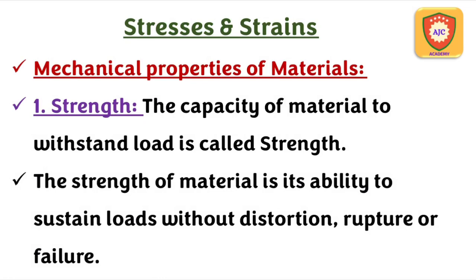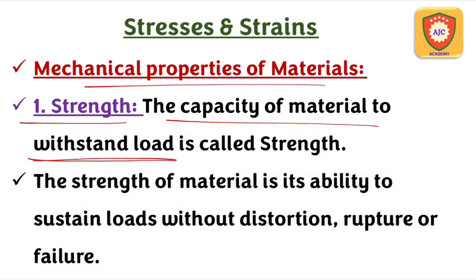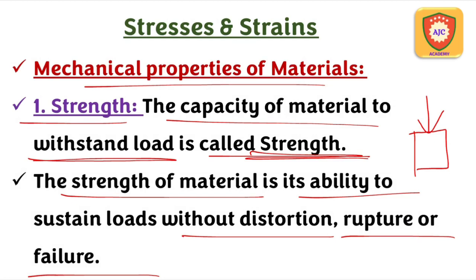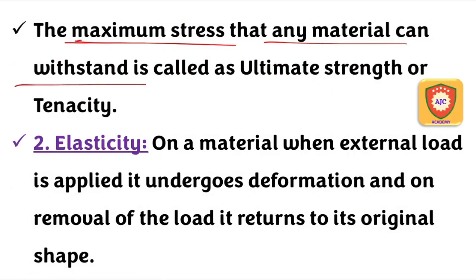We will talk about the mechanical properties of materials. The first property is strength — the capacity of a material to withstand load. The maximum stress a material can withstand is called ultimate strength or tenacity.